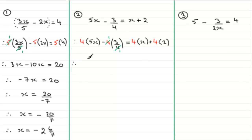And that leaves us now with four times 5x, which is 20x, then minus one times three is minus three, equals four times x is 4x, and four times two is eight.